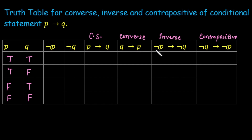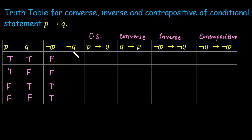We need not P and not Q for the table. For negation P: if P is true, not P is false; if P is false, not P is true. For negation Q: if Q is true, negation Q is false; if Q is false, negation Q is true.